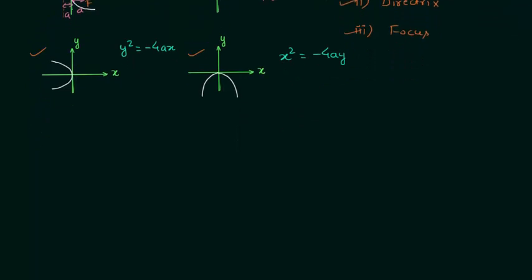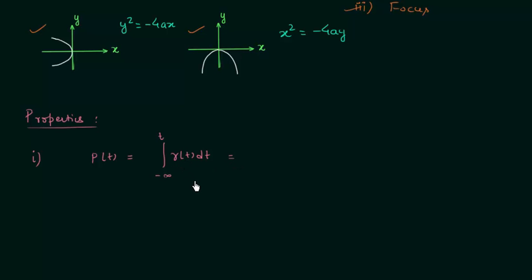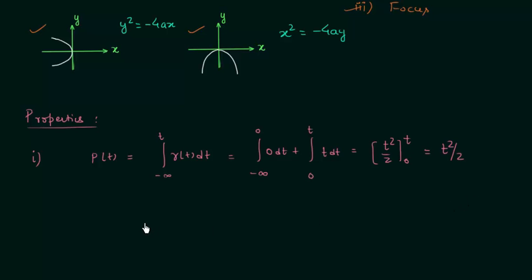Now we will find the unit parabolic signal using the unit ramp function. In the first property, you obtain the unit parabolic function by integrating the unit ramp function from minus infinity to t. We know the unit ramp function R(t) = 0 from minus infinity to 0, and R(t) = t from 0 to t. Performing the integration gives t²/2. Conversely, when you differentiate the unit parabolic signal, you will obtain the unit ramp signal.